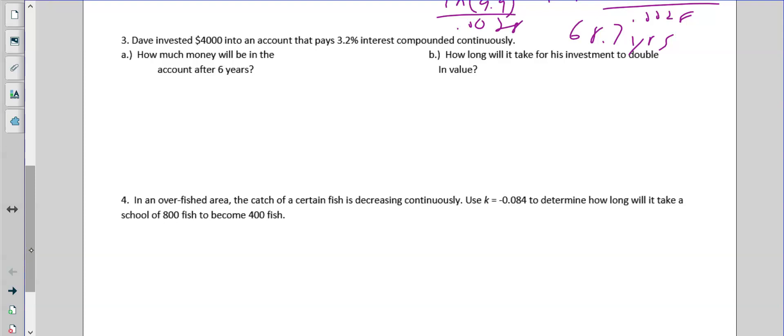Okay, number three. We have four thousand dollars, 3.2 continuously, six years. So 4000 e 0.032, change to a decimal, and then you put it in six. Type that in the calculator. You get four thousand eight hundred and forty six dollars and sixty eight cents. Make sure you pay attention to the rounding.